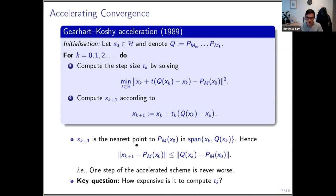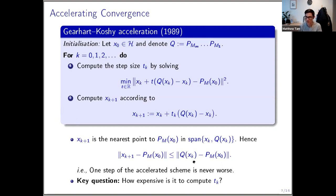In this algorithm, x_{k+1} is the nearest point to the solution in the span of these two points, giving useful inequalities. However, we have this new step of computing the step size t_k, which could be expensive. The key question is: can we find an efficient way to compute t_k to make this algorithm practical?